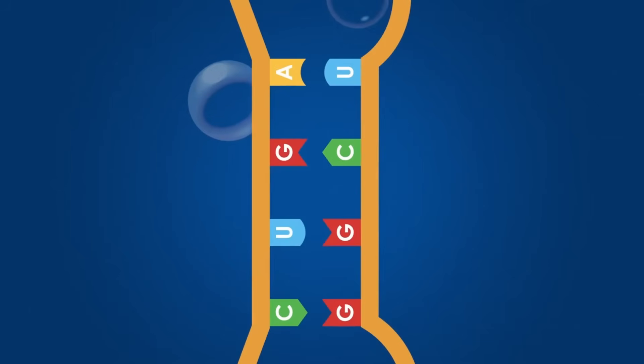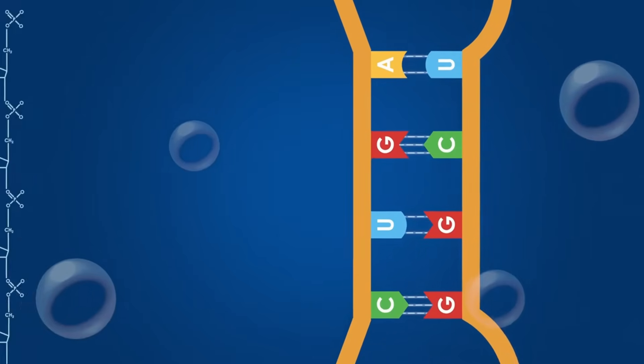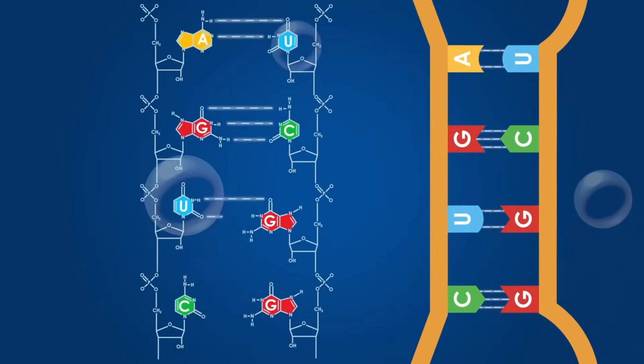The bases pair up in specific ways. Adenine pairs with uracil, and guanine pairs with cytosine or with uracil. The strength of these base pairs varies depending on the number and type of chemical bonds involved.